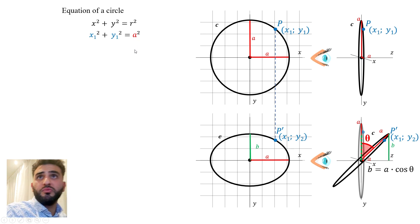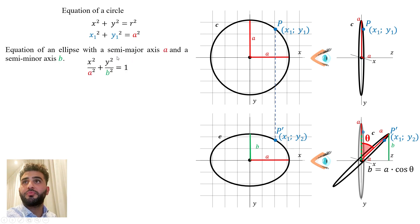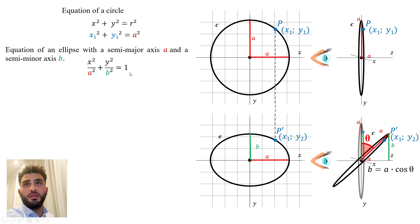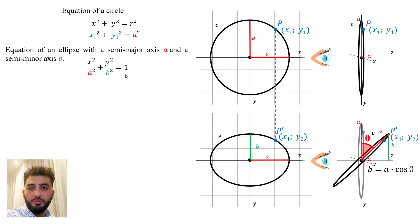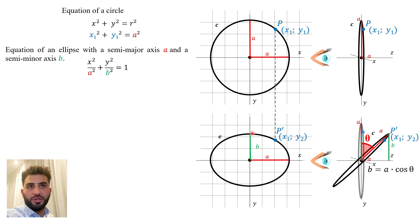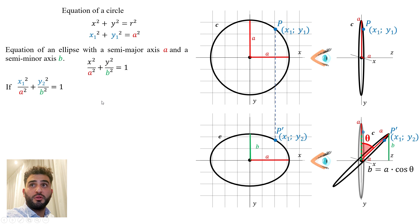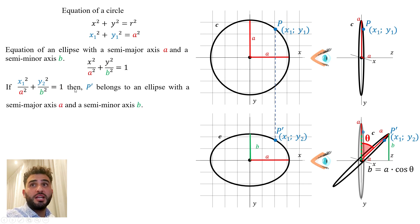Now let's continue. Let's remind the equation of an ellipse. The equation of an ellipse with a semi-major axis A and a semi-minor axis B is x squared over a squared plus y squared over b squared equals 1. This means that if I take any point belonging to an ellipse and put its coordinates into that equation, the result will be 1. In my case, I'm not yet saying this is an ellipse — I call it a compressed circle. But if I take the coordinates of P', so x1 squared over a squared plus y2 squared over b squared equals 1, then it means that P' belongs to an ellipse with semi-major axis A and semi-minor axis B.